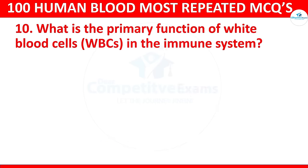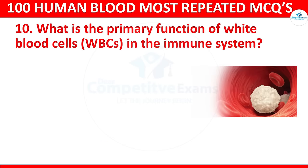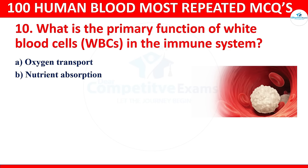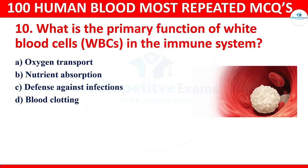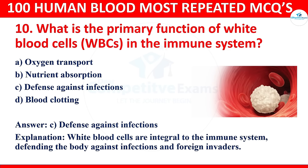Question 10: What is the primary function of white blood cells (WBCs) in the immune system? The options are oxygen transport, nutrient absorption, defense against infection, or blood clotting. The correct answer is defense against infection. White blood cells are integral to the immune system, defending the body against infection and foreign invaders.